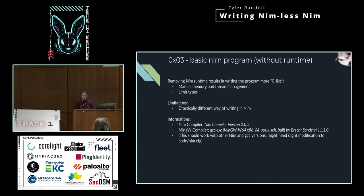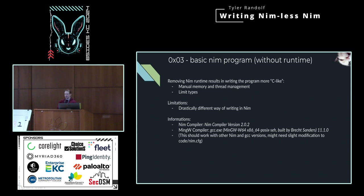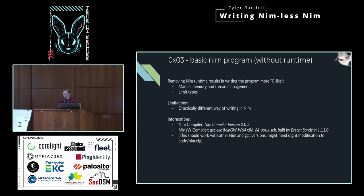So let's look at how to write a program without this runtime. In this style of coding, it becomes a little more C-like. We're managing memory ourselves, managing threads ourselves — we don't have a runtime to do that for us. We also have a limit on types. Nim has various types that get allocated on the heap, such as reference objects, so all of our objects have to be on the stack. We lose a lot of functionality with the string class, since strings get dynamically allocated on the heap — we can't just add or remove. We have to manage all that ourselves.